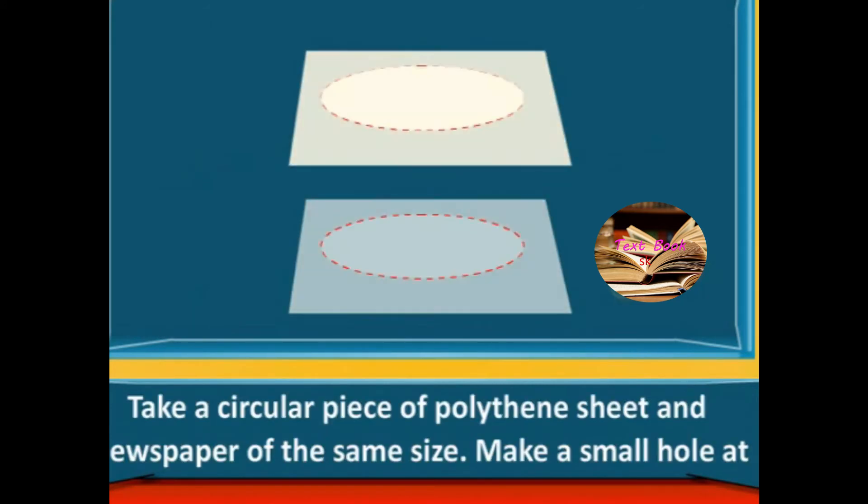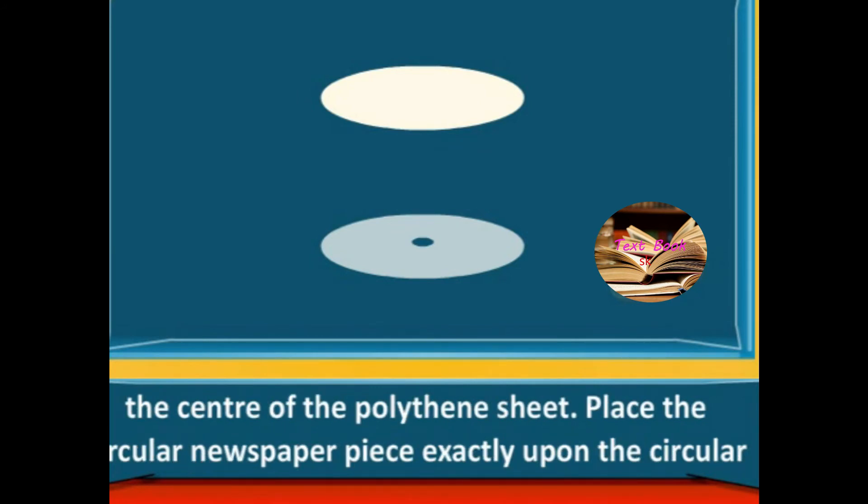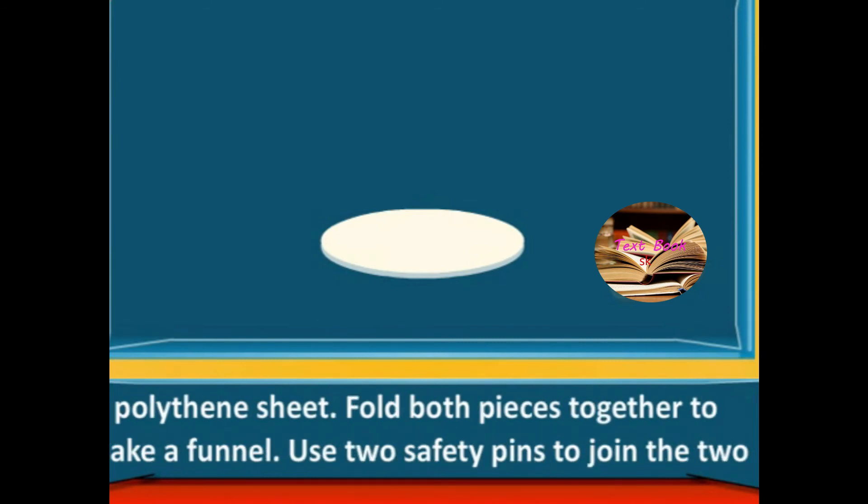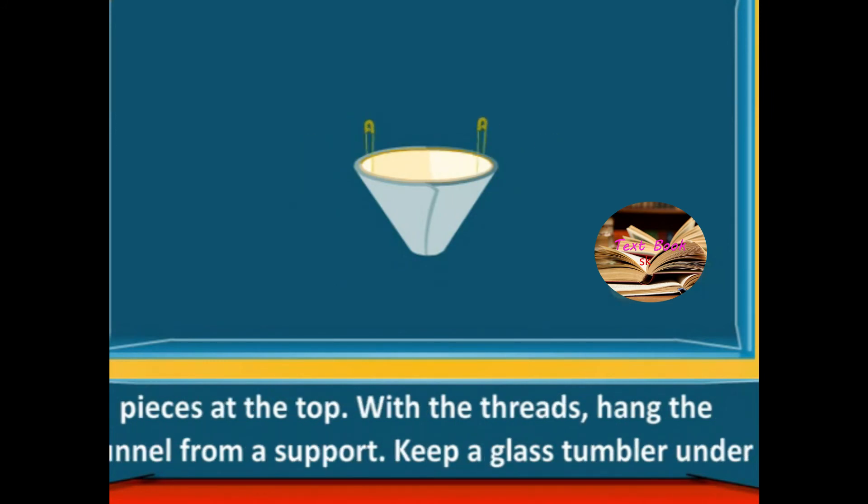Method: Take a circular piece of polythene sheet and newspaper of the same size. Make a small hole at the center of the polythene sheet. Place the circular newspaper piece exactly upon the circular polythene sheet. Fold both pieces together to make a funnel. Use two safety pins to join the two pieces at the top.